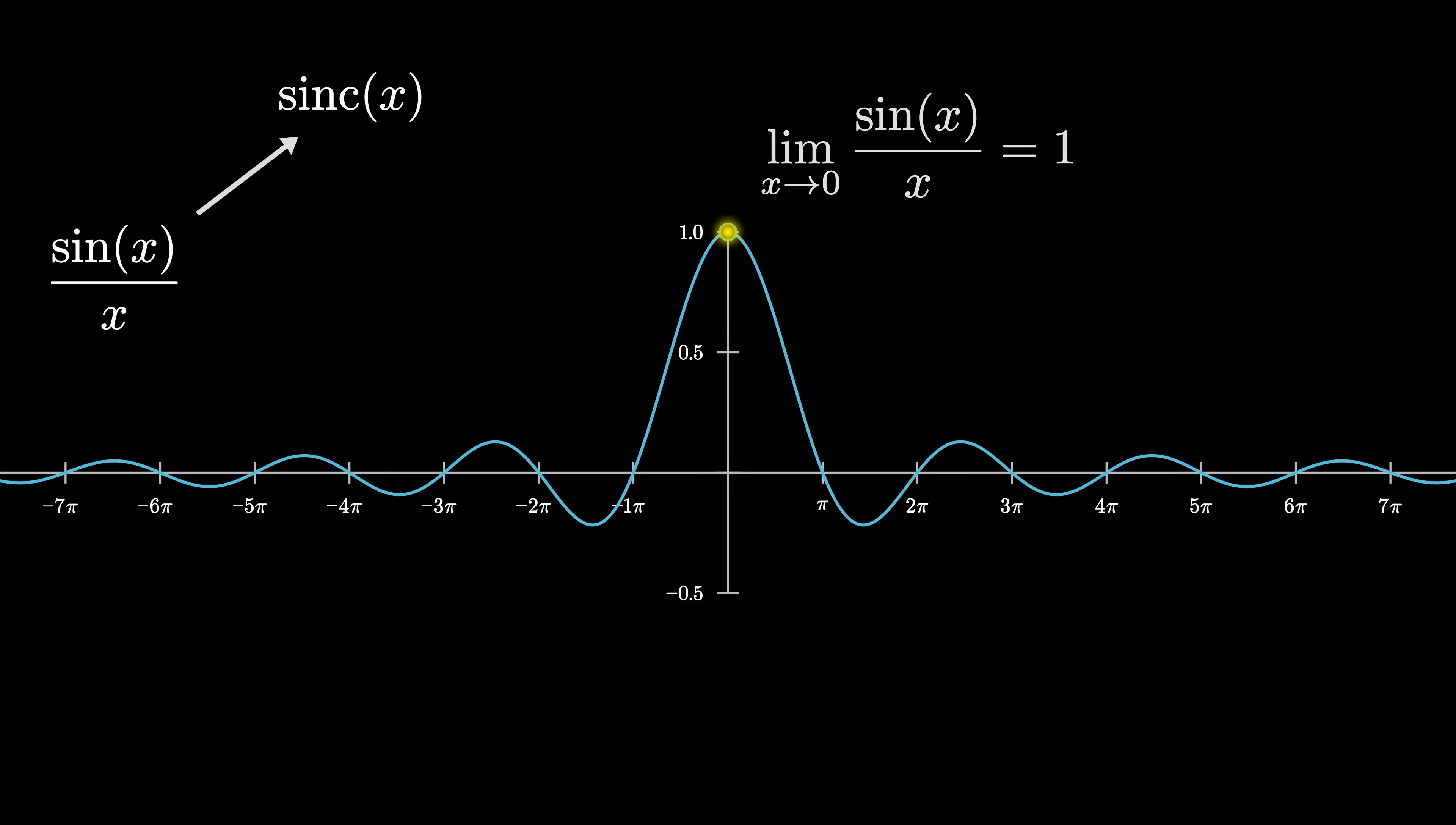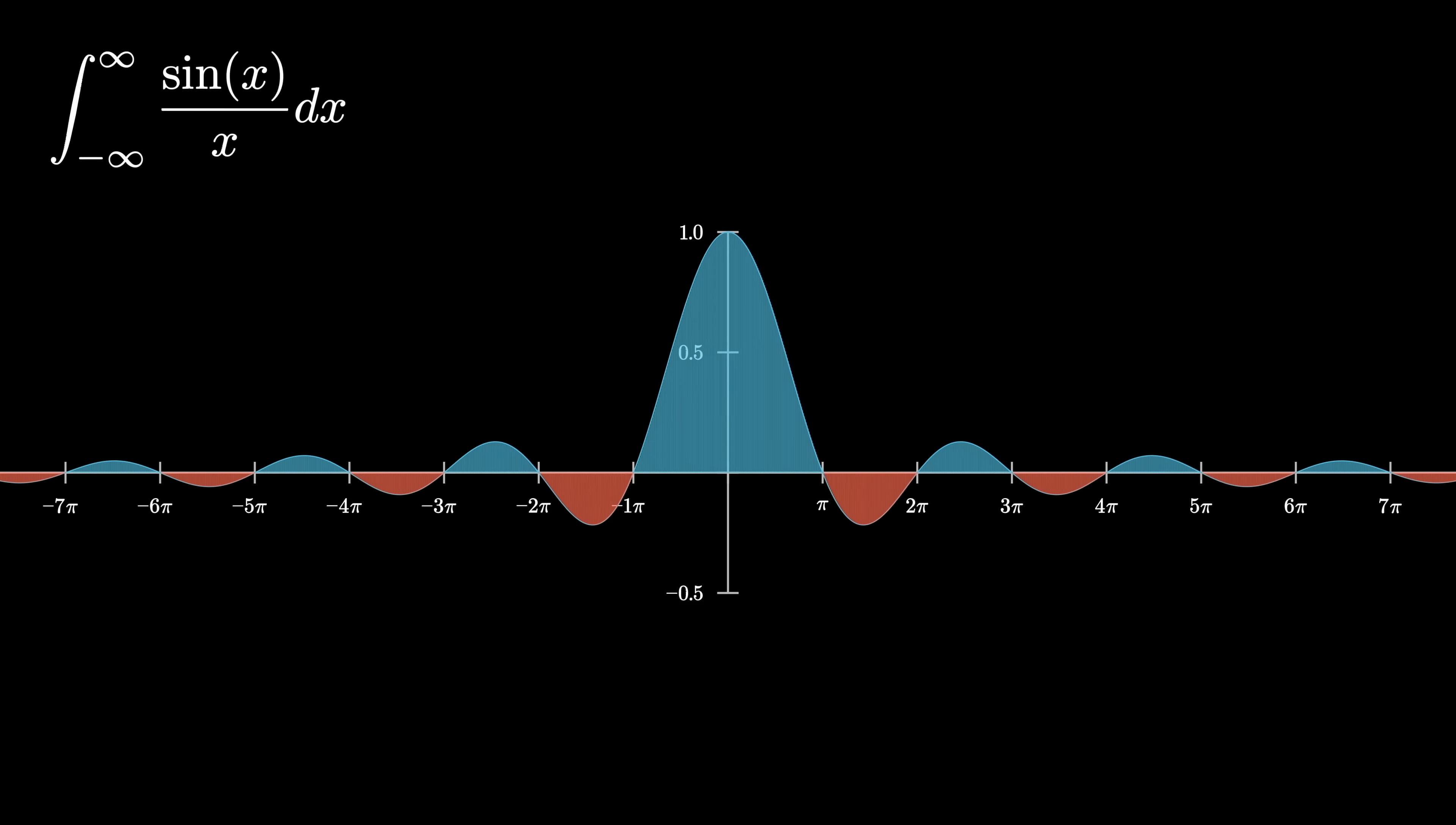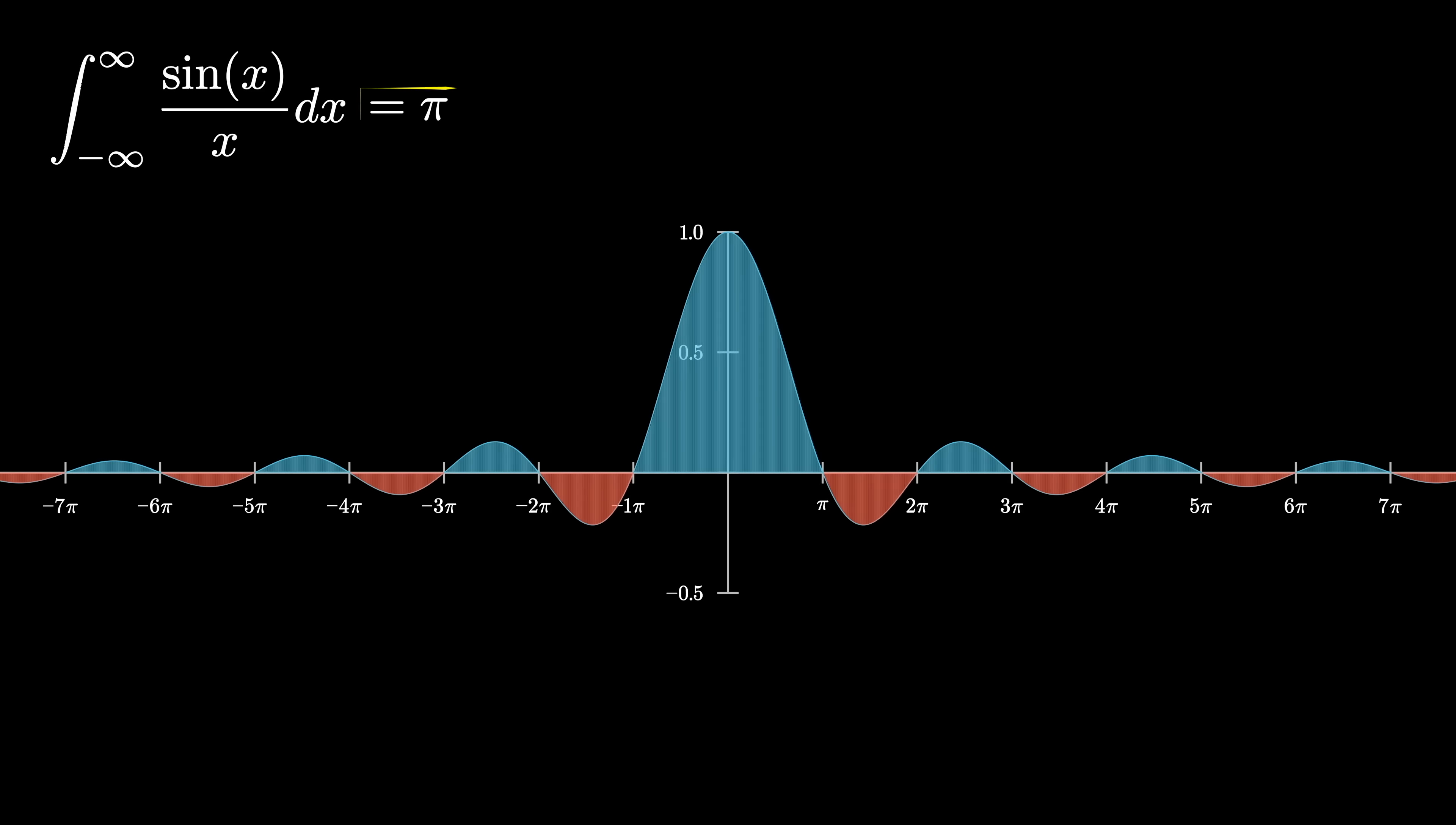All of that is a little by the by, because the thing we actually care about is the integral of this curve from negative infinity to infinity, which you'd think of as meaning the area between the curve and the x-axis, or more precisely, the signed area, meaning you add all the area bound by the positive parts of the graph and the x-axis, and you subtract all of the parts bound by the negative parts of the graph and the x-axis. Like we saw at the start, it happens to be the case that this evaluates to be exactly pi.